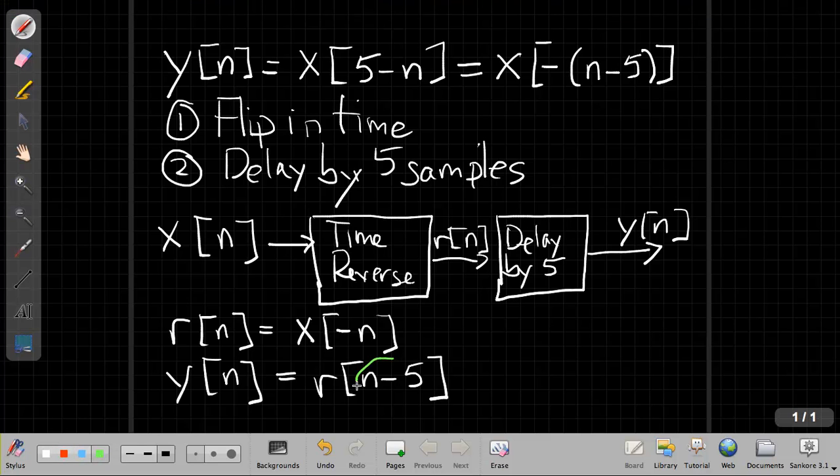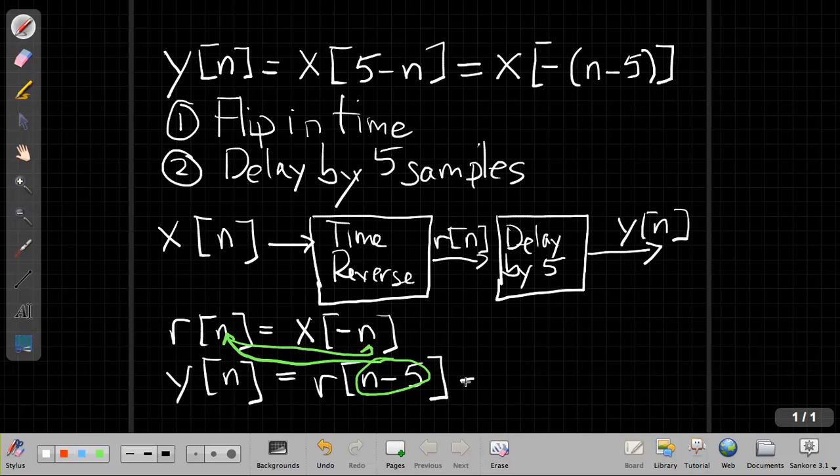I can say, well, if I want to find this in terms of x, I take this n minus five here and substitute it in for n, which means all of the n's inside here.